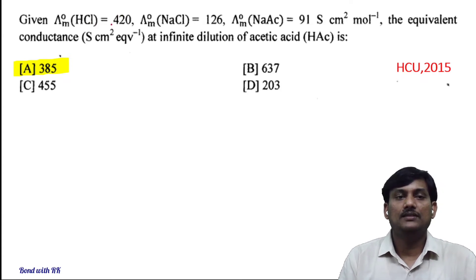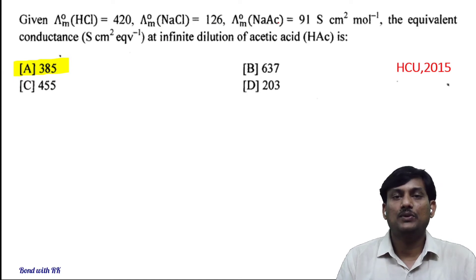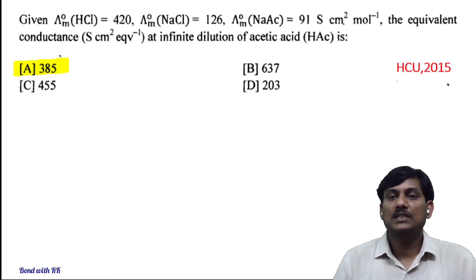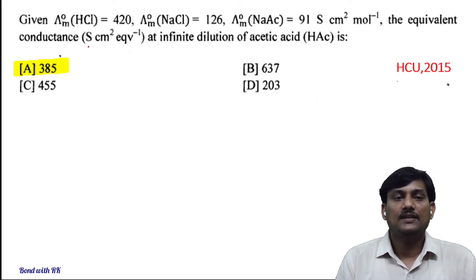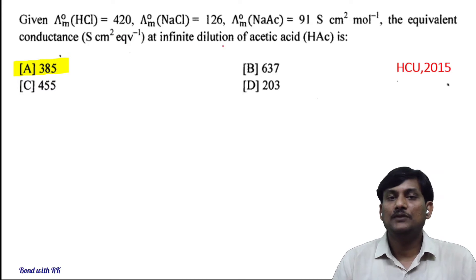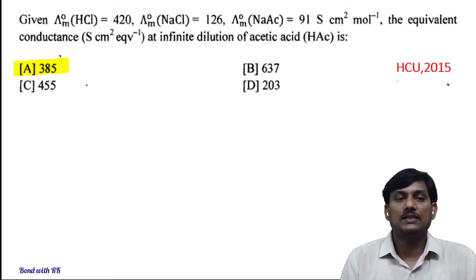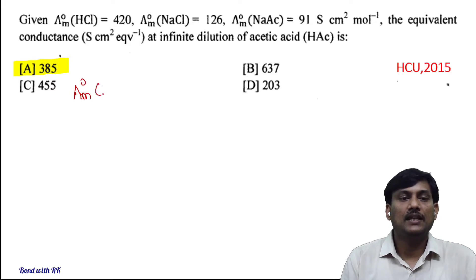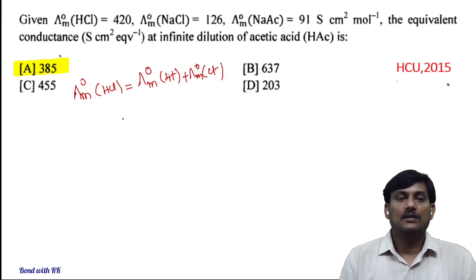Given: λ°m of HCl = 420, λ°m of NaCl = 126, λ°m of sodium acetate = 91, all in S·cm²·mol⁻¹. The equivalent conductance at infinite dilution of acetic acid is to be found. At infinite dilution, according to Kohlrausch's law, the molar conductance of an electrolyte is the sum of the molar conductance of its ions: λ°m = λ°m(H⁺) + λ°m(CH₃COO⁻).